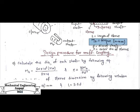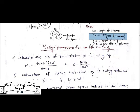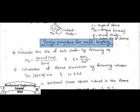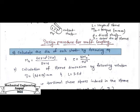The design procedure of the MOF coupling involves different steps to follow. First, we need to calculate the diameter of the shaft, by which we can calculate the length of the hub, the outer diameter of the sleeve, and the diameter of the shaft.